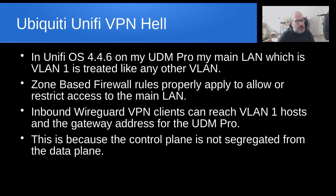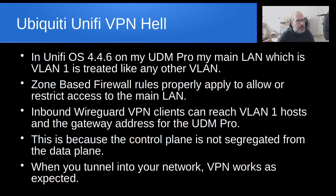This is because the control plane is not in any way segregated from the data plane — the firewall controls all of your access. So when you tunnel into your network, the VPN works as expected. Provided that you allow access for those VPN clients, they can gain access to anything on your main network, including that main LAN or VLAN 1.